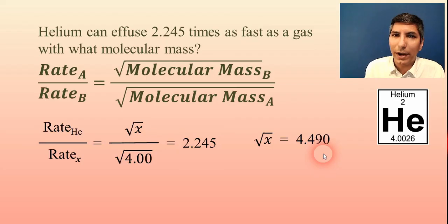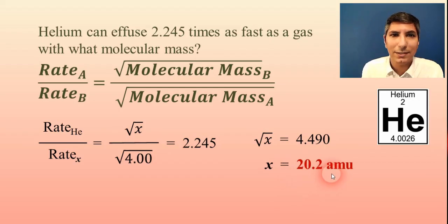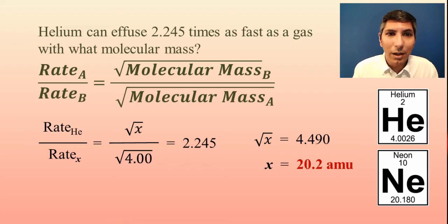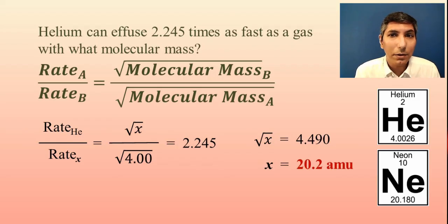Now, to solve for X, I have to square both sides. So if I square both sides, that's going to lift the square root sign off of this. I square this number, and I get that X equals about 20.2 atomic mass units. So that's my answer. Now, the question doesn't ask me to do this, but I could go one step further and try to identify the gas. And my best guess is probably going to be neon, because that's a gas that is very close to 20.2 atomic mass units. So notice that using Graham's Law of Effusion, I can look at the relative rates at which these gases move, and I can actually figure out what gas I'm talking about. So a pretty neat little calculation there.